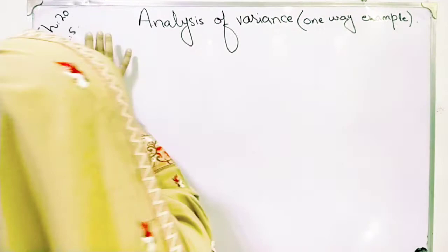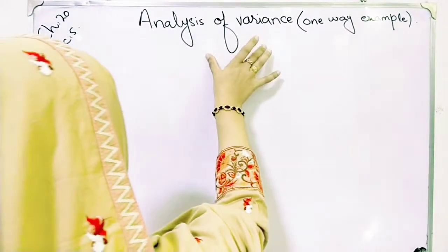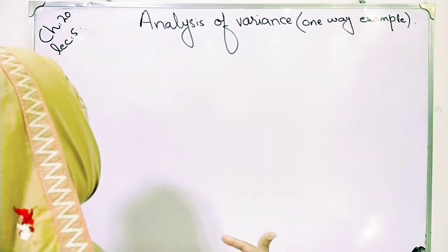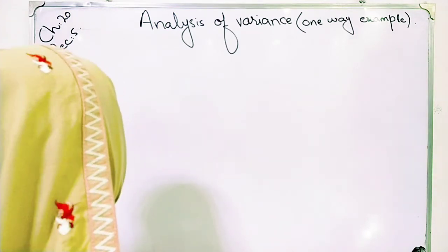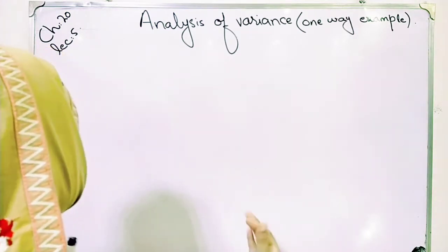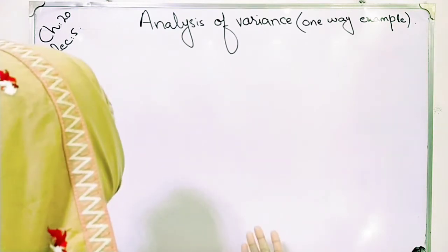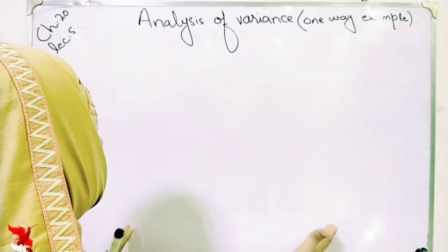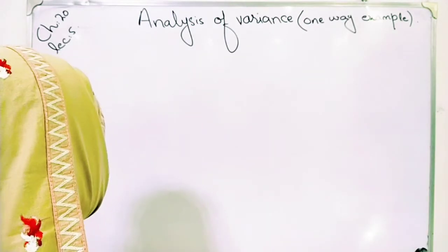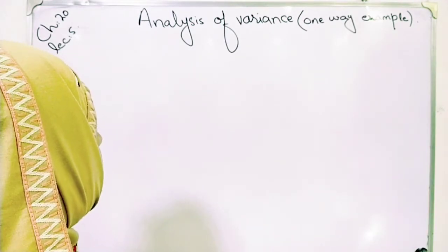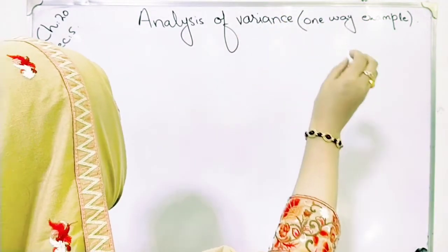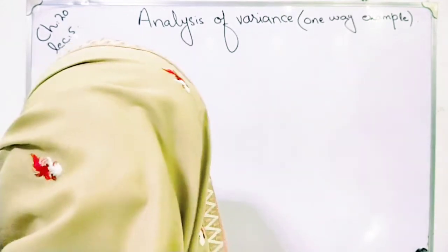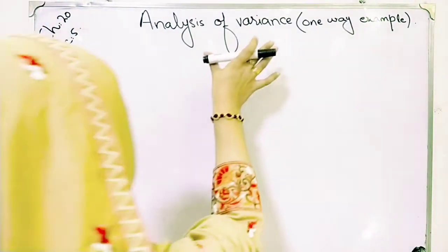Our lecture is lecture number 5, analysis of variance - one way analysis of variance which we discussed. I had to give you two examples: one where we have given variance and means, and one where we have given data and samples. These are two examples from previous lectures. Now we are discussing one way analysis of variance with some different situations that I will discuss.